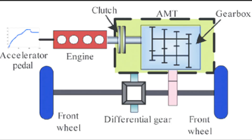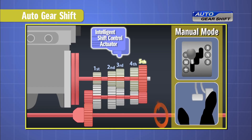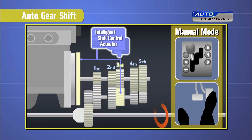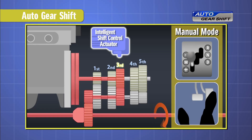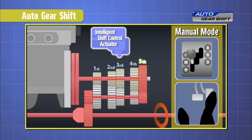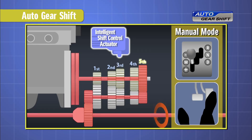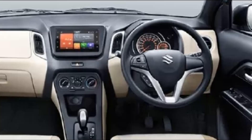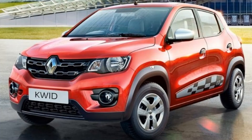Some AMTs also offer a manual shift mode where the driver can change gears by using the gear shifter without having to use a clutch. Due to their cost effectiveness, it is mostly found in budget cars like the Hyundai Santro, Maruti WagonR, Renault Kwid and so on.